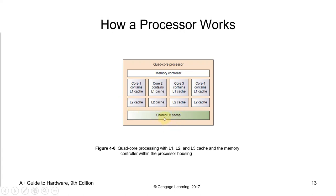The shared Level 3 (L3) cache is the largest cache memory unit and also the slowest. It can range between 4 MB to upwards of 50 MB. Modern CPUs have dedicated space on the CPU die for the L3 cache, and it takes up a large chunk of space.